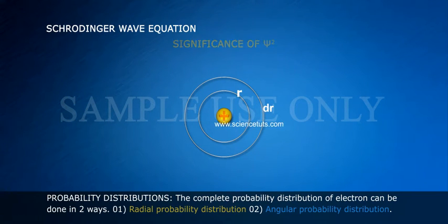Probability Distributions: The complete probability distribution of electron can be done in two ways: 1. Radial probability distribution, 2. Angular probability distribution.